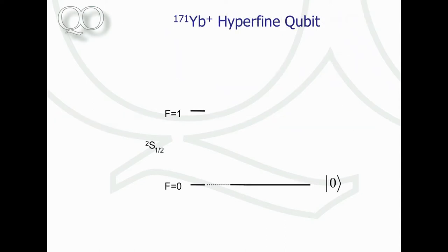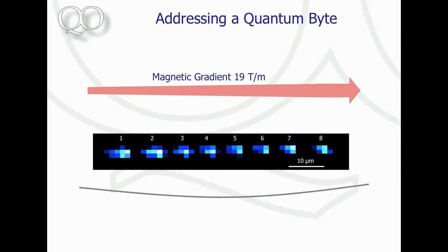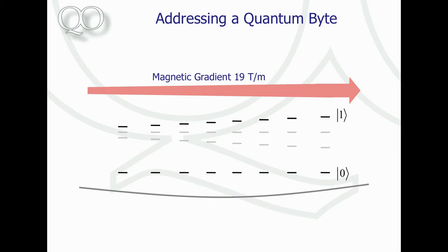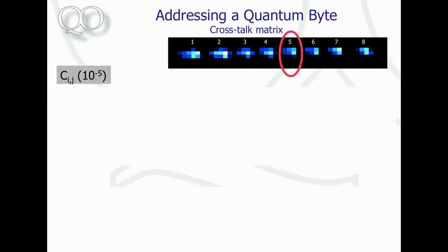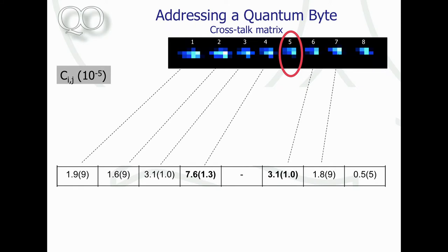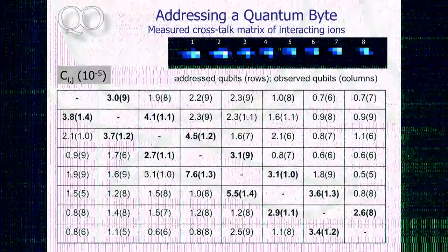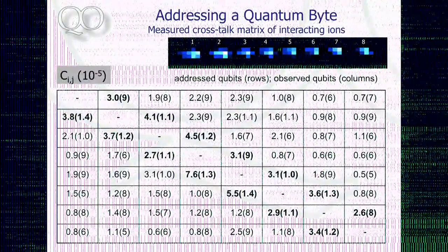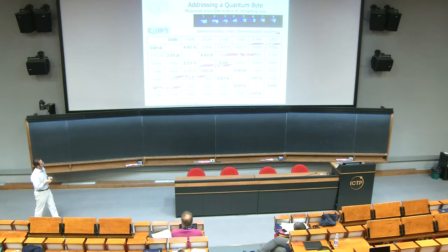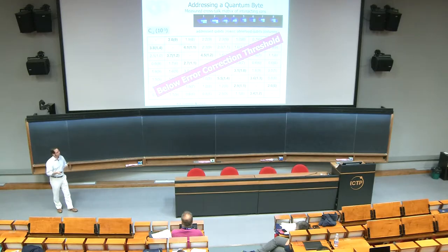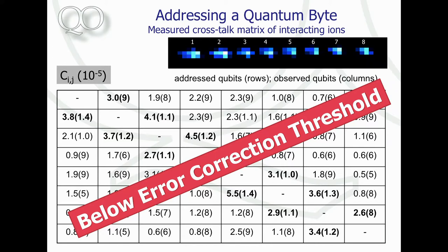Our qubit is a hyperfine qubit in ytterbium, which has the simplest possible hyperfine structure — total angular momentum zero and one. The F=1 state has three substates, and we put this in a magnetic gradient so trapped ions now have different hyperfine splittings, allowing us to address them in frequency space instead of position space. We drive thousands of quantum gates on one ion and observe the crosstalk on all others — the crosstalk matrix shows crosstalk well below a typical error correction threshold of 10⁻⁴.